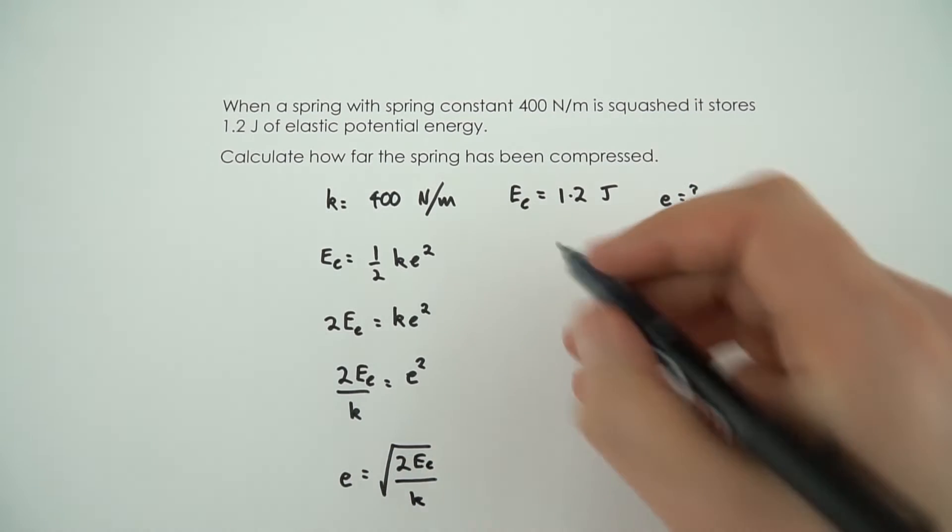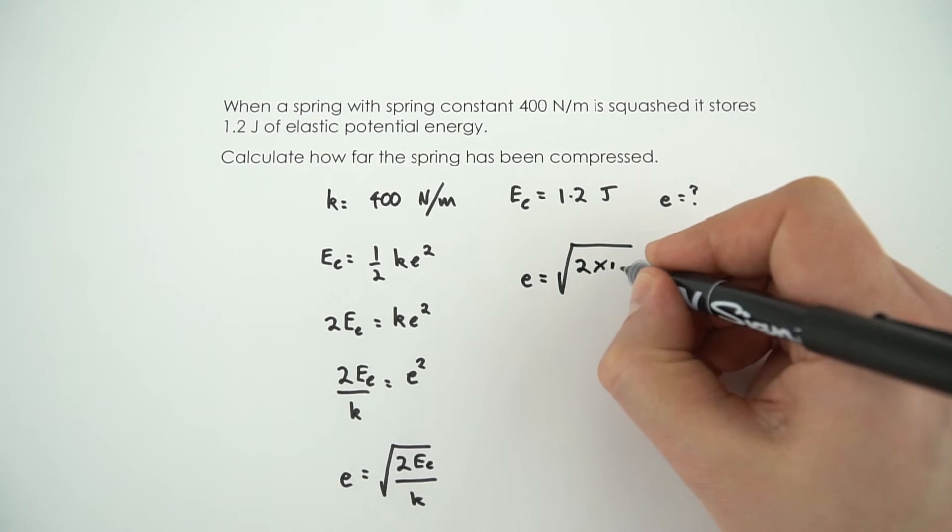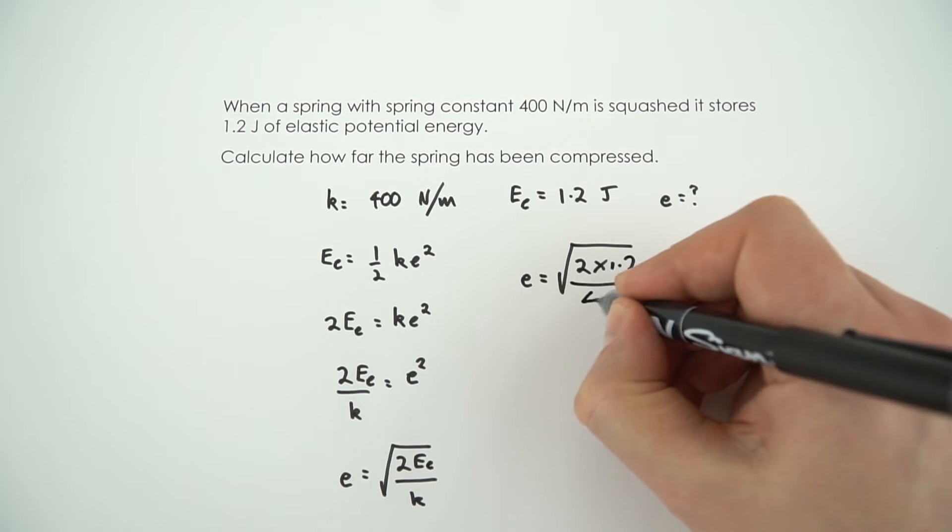Again, a lot of E's in this. So that means the extension, or the compression, is going to be equal to the square root of 2 times 1.2 divided by 400.